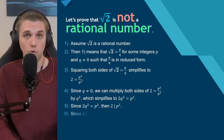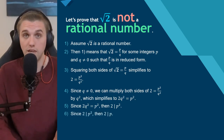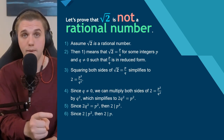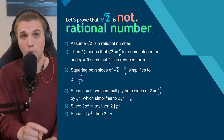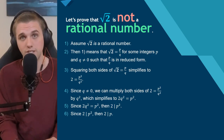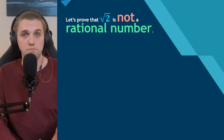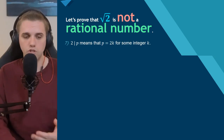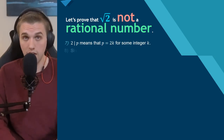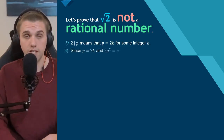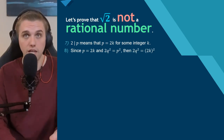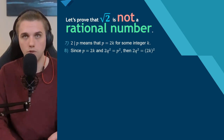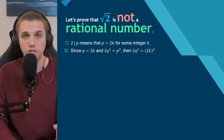Since 2 divides p², then 2 divides p — this is a phenomenon you should prove by yourself as an exercise. So now we know that 2 divides p, meaning p = 2k for some integer k. Since p = 2k, we can substitute to get 2q² = (2k)².